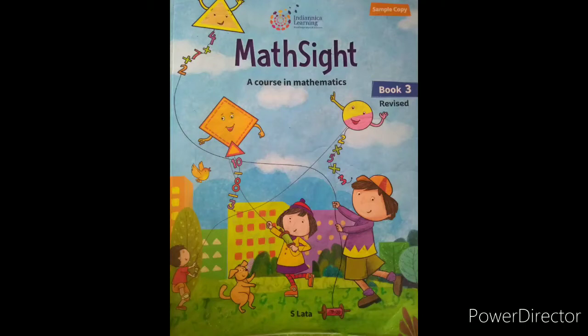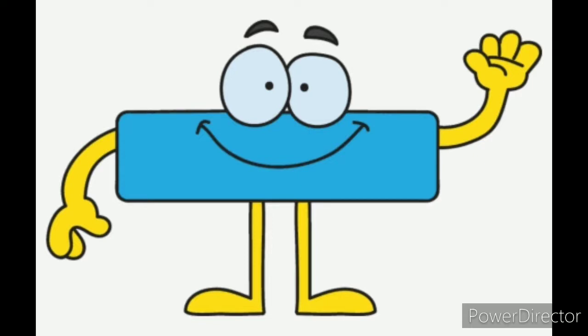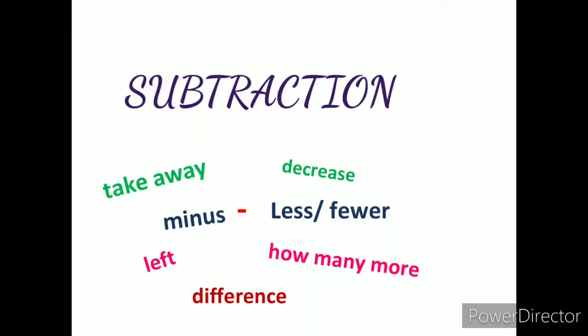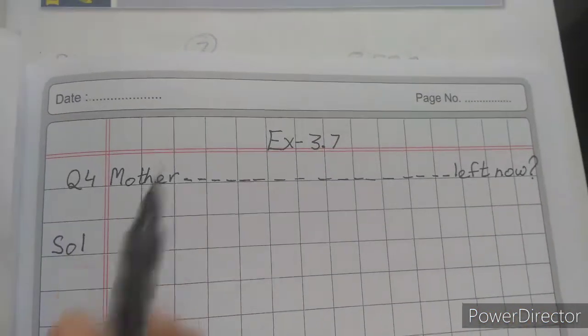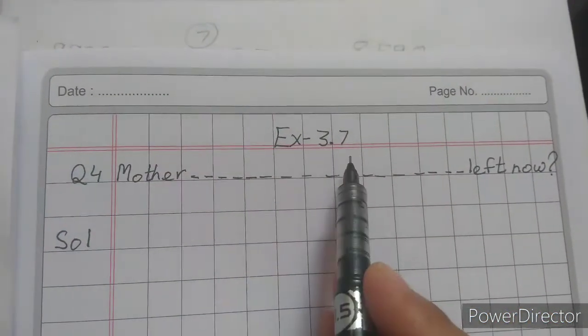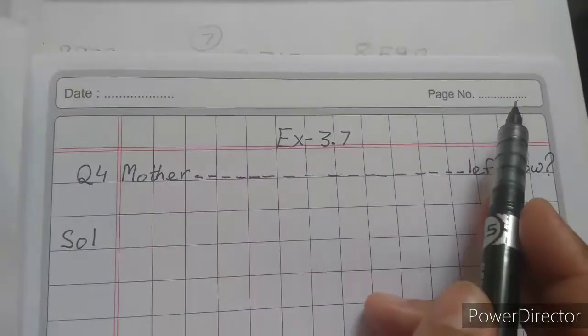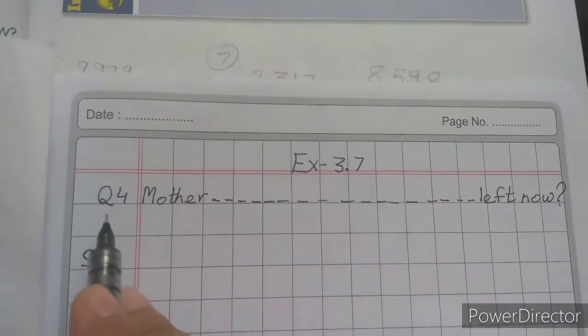Hello students, how is everyone? So you all must have done exercise 3.7 question number 1, 2, and 3. Moving further, today we are going to do the rest of the questions of exercise 3.7. So take out your maths notebook so that we can start our work. Put today's date, page number, moving further with question number 4.